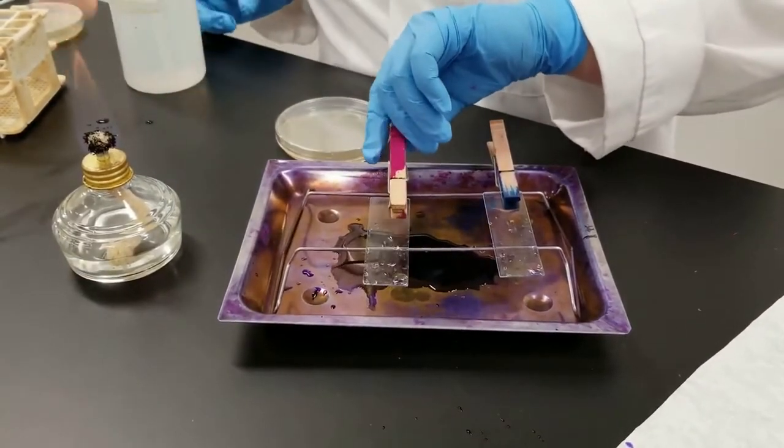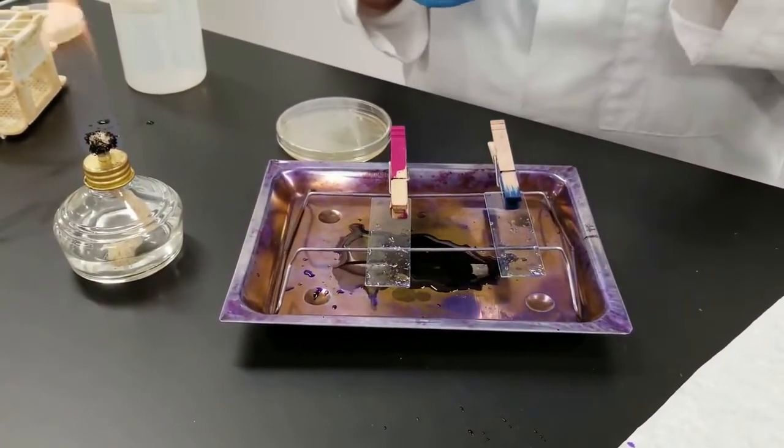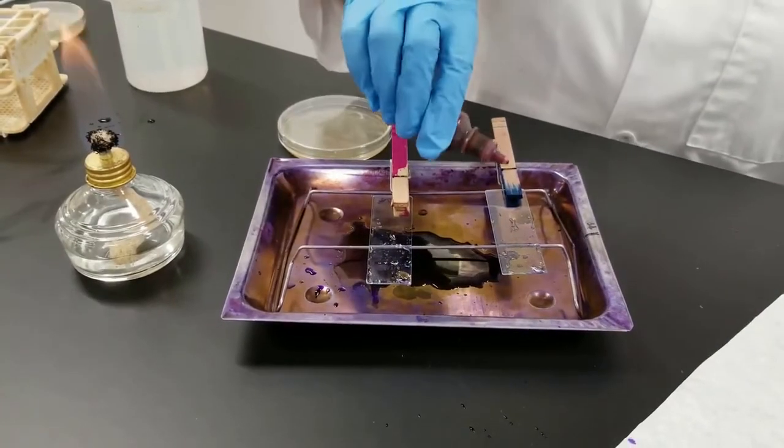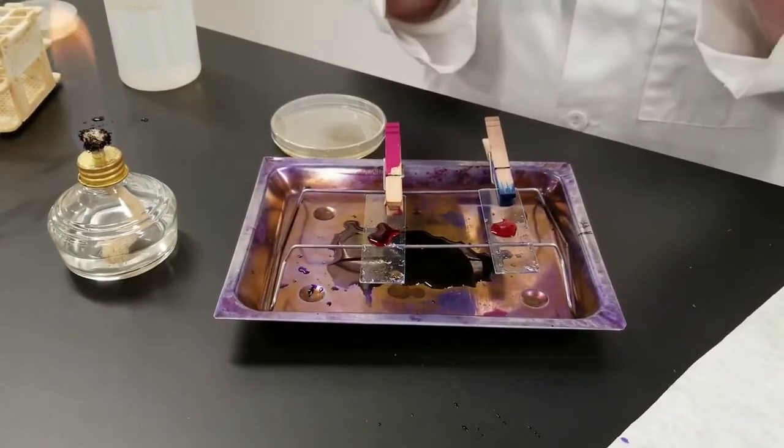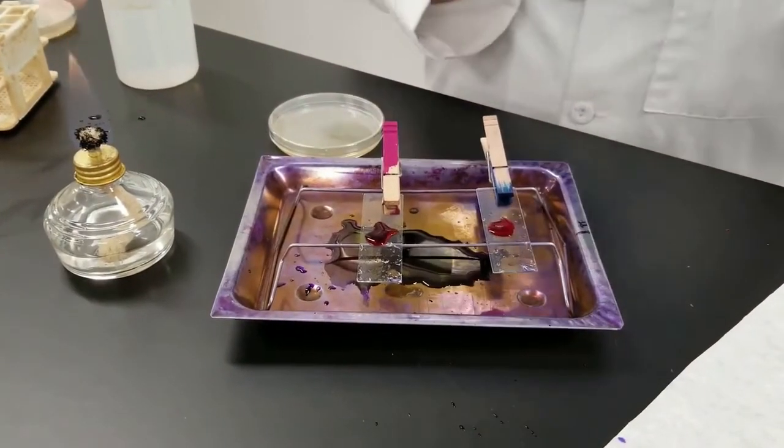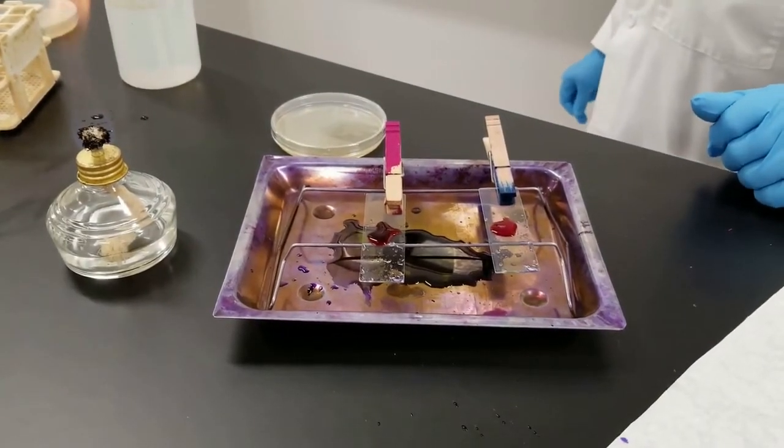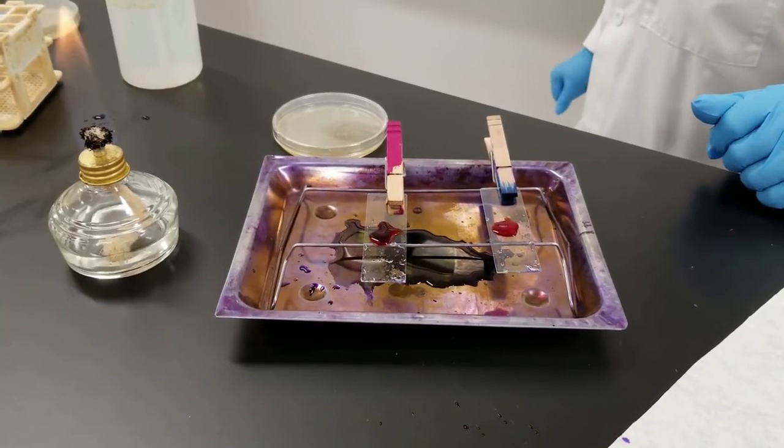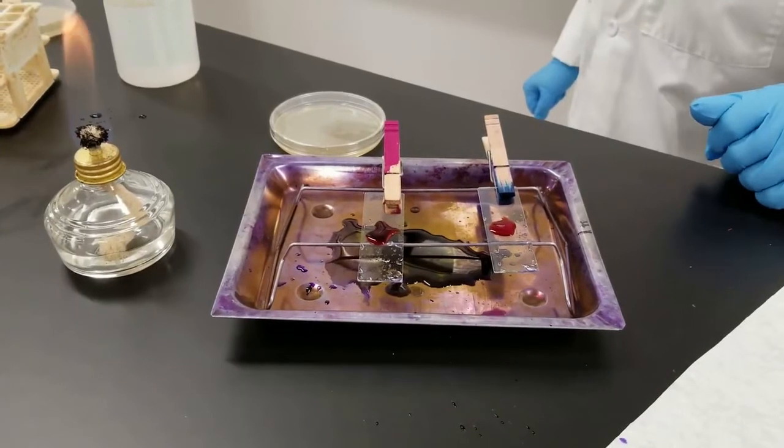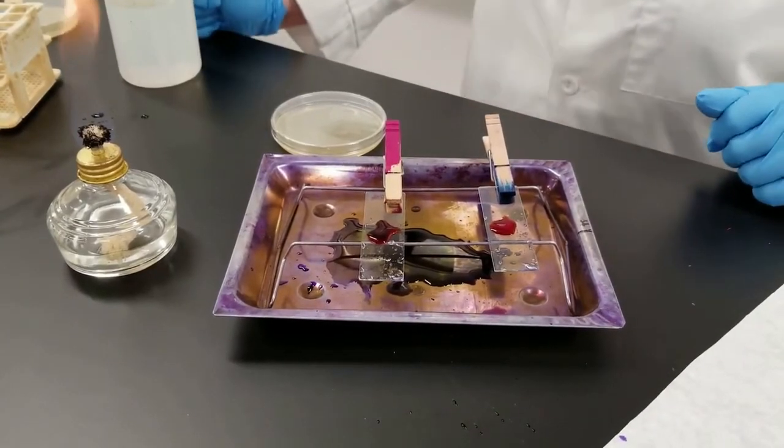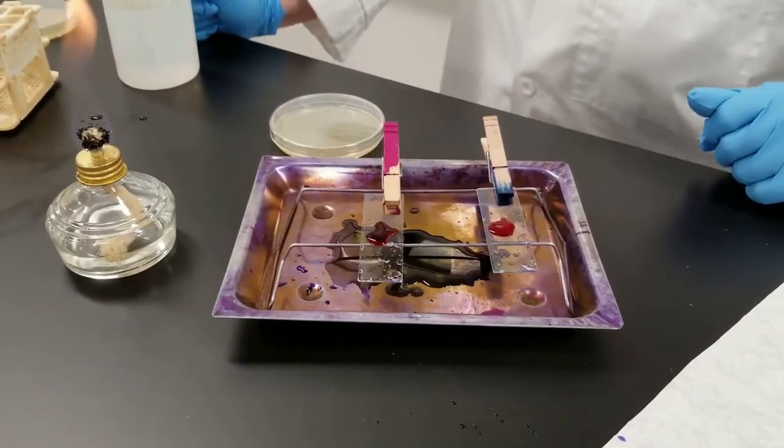At this point, your gram-negatives would be colorless, the gram-positives would retain that purple or blue color. The last step is we are adding safranin red. This is a counter stain or a secondary stain. Your gram-positive should remain purple and the gram-negatives will pick up that red stain. We leave that on for a minute. So your timing is crystal violet one minute, iodine one minute, alcohol 30 seconds, safranin red one minute.